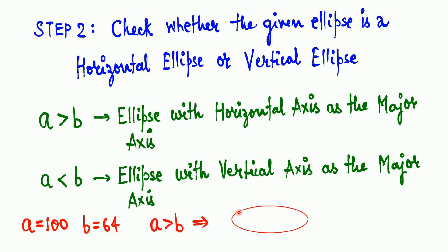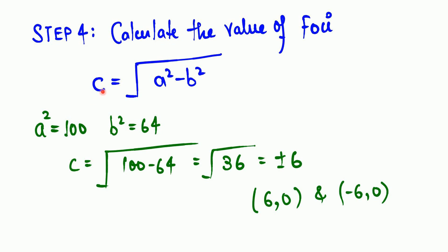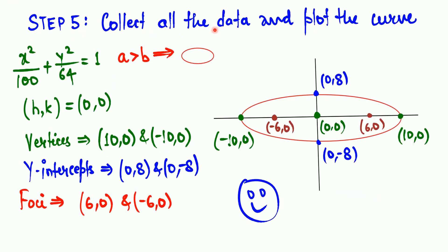Find the vertices: (±a, 0) → (10, 0) and (−10, 0). Find the co-vertices: (0, ±b) → (0, 8) and (0, −8). Find the foci: c = √(a² − b²) = √(100 − 64) = √36 = ±6. So the two foci are at (6, 0) and (−6, 0). Mark these on the graph.